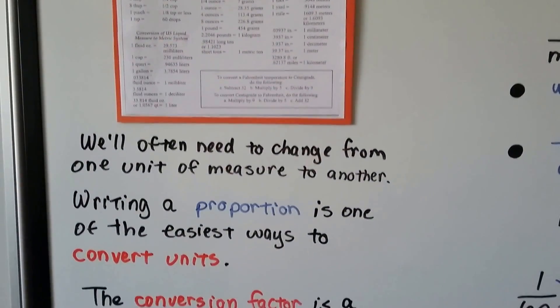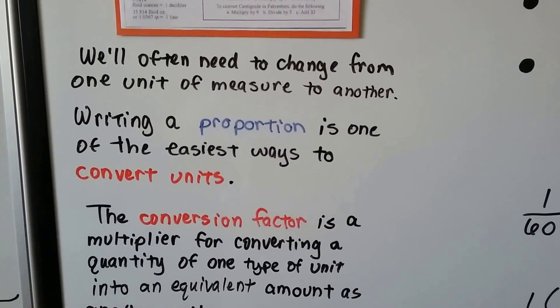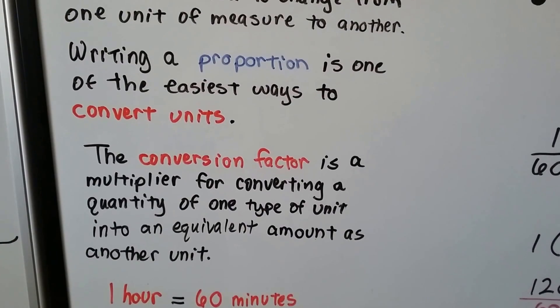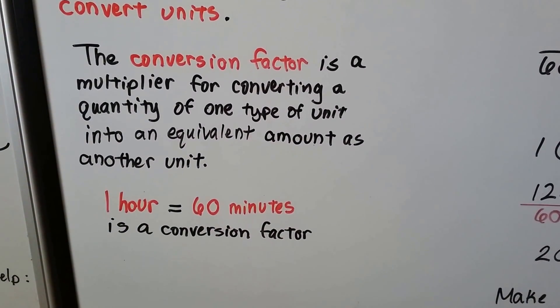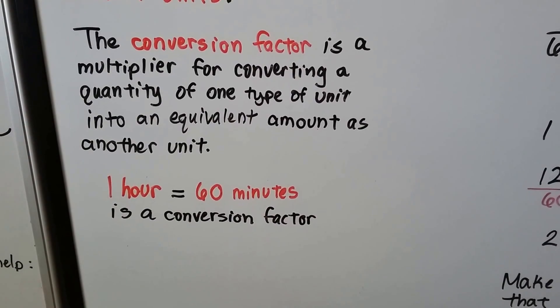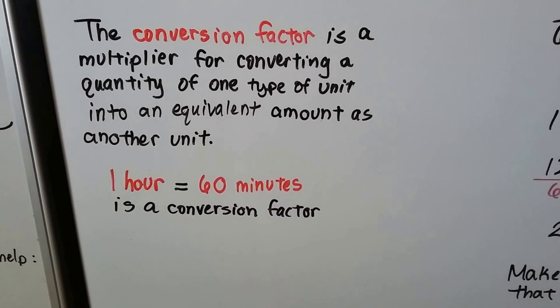We'll often need to change from one unit of measure to another, and writing a proportion is one of the easiest ways to convert units. The conversion factor is a multiplier for converting a quantity of one type of unit into an equivalent amount as another unit.